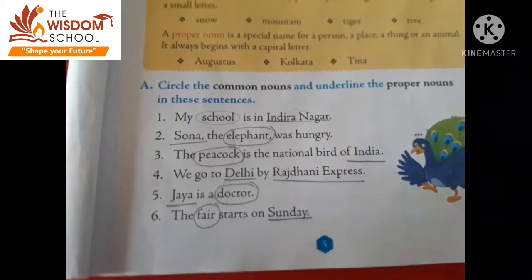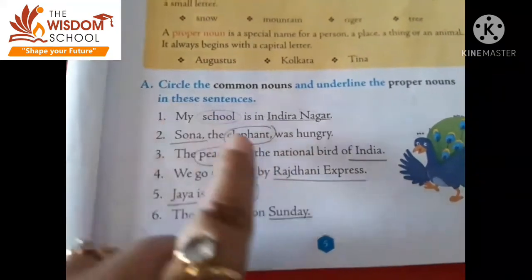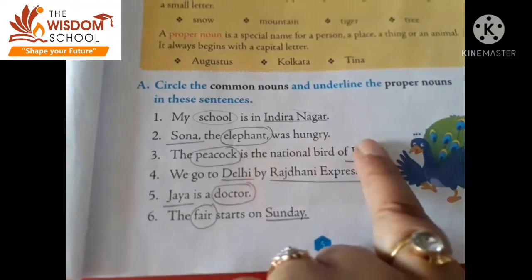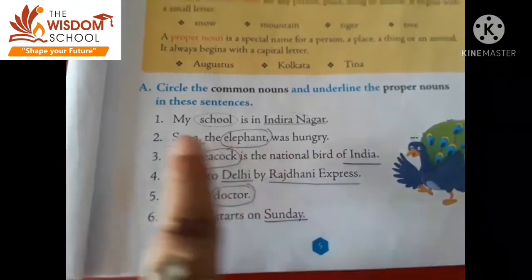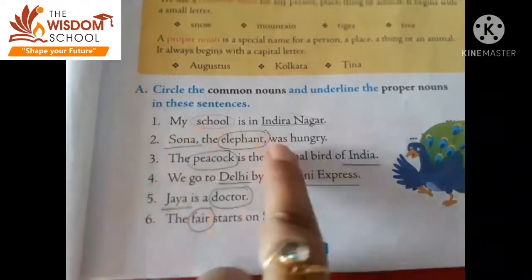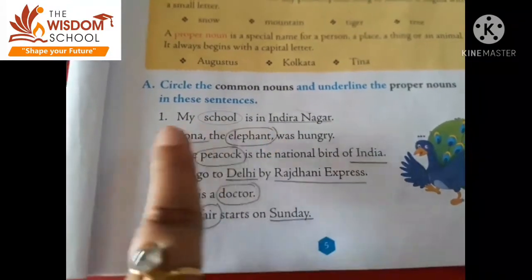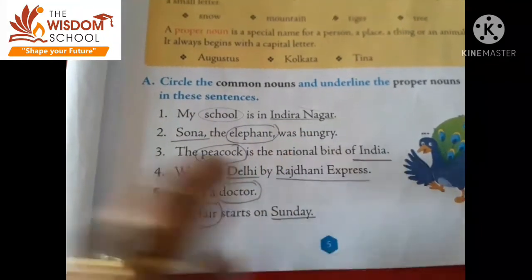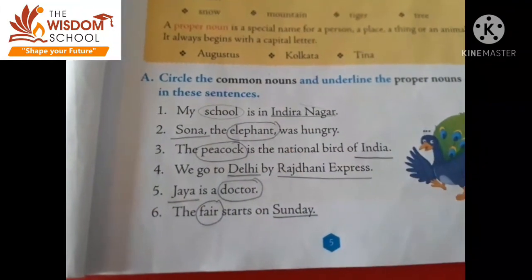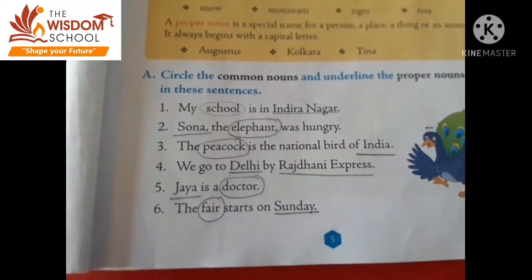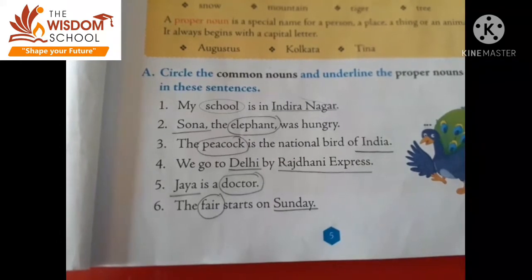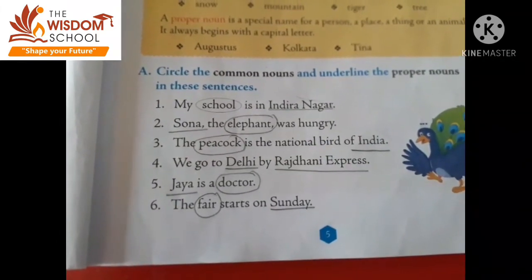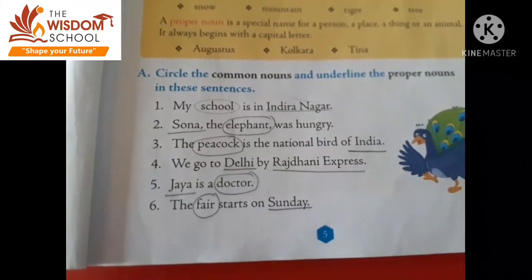Sona, the name of the elephant. Sona the elephant was hungry. So yahan name kya diye hue hain? Sona aur elephant. Sona kya hai? Proper noun hai. Aur elephant kya hai? Common noun hai. Elephant koi bhi ho sakta hai, lekin har elephant ka naam Sona to nahi hoga. So Sona is a proper noun.